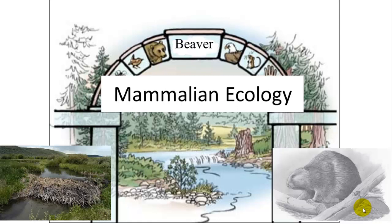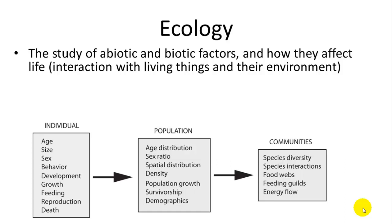This is just one example of ecology and how mammals are at the center of many ecological studies. We're going to talk about a lot of principles and intermingle some of the mammals which have been important for those aspects. First off, what is ecology? It's the study of both abiotic and biotic factors — living and non-living factors — and how they affect the living things there.